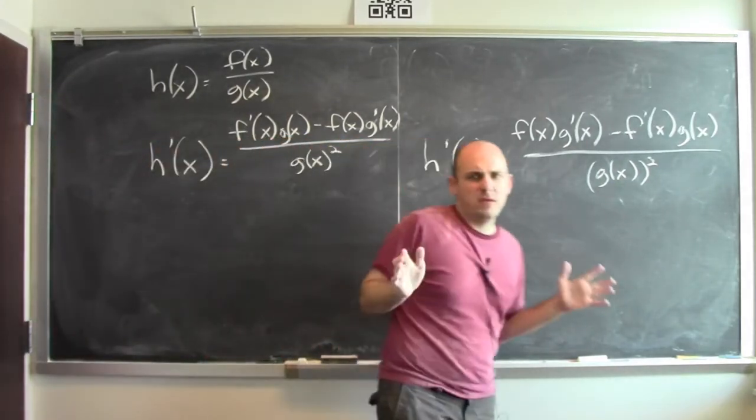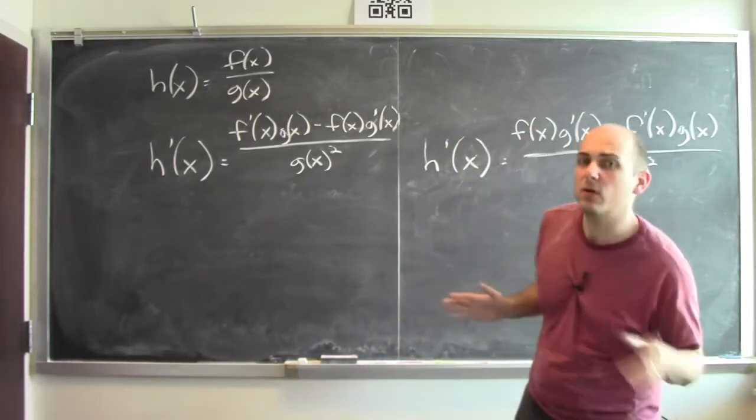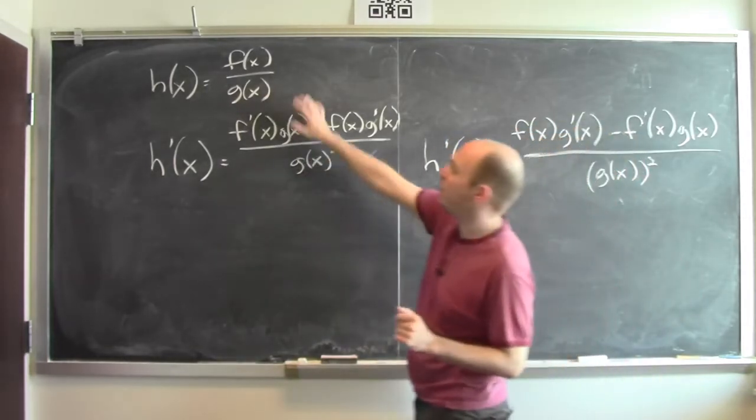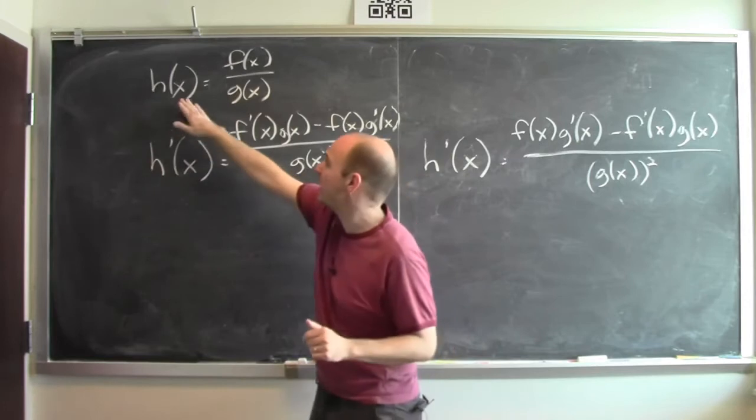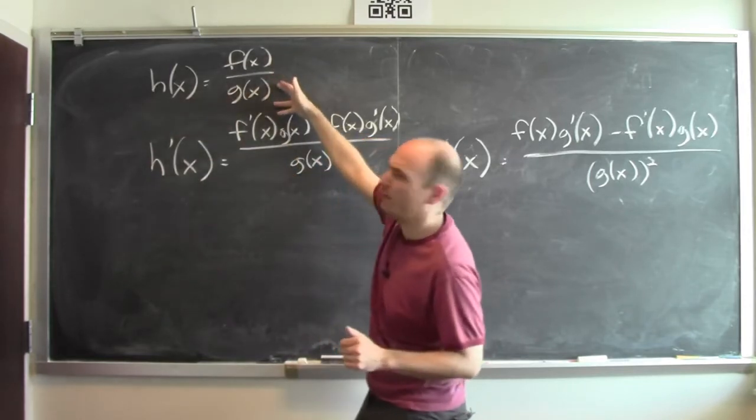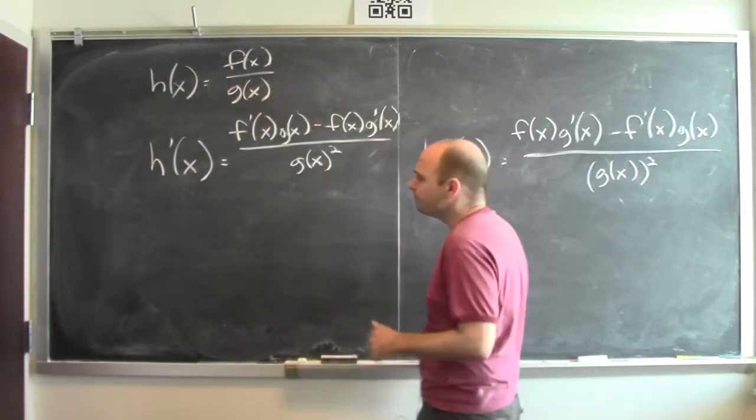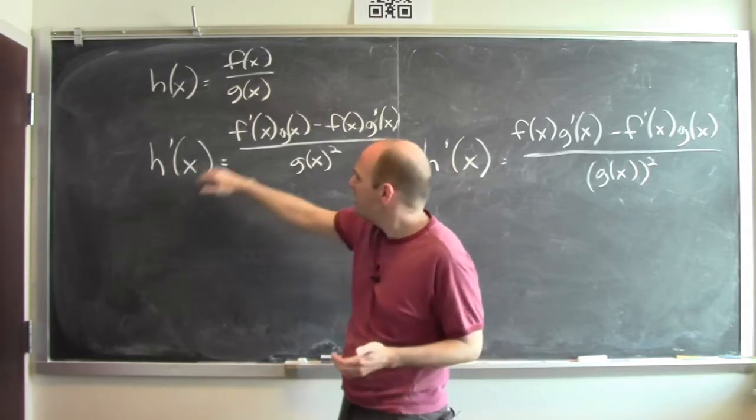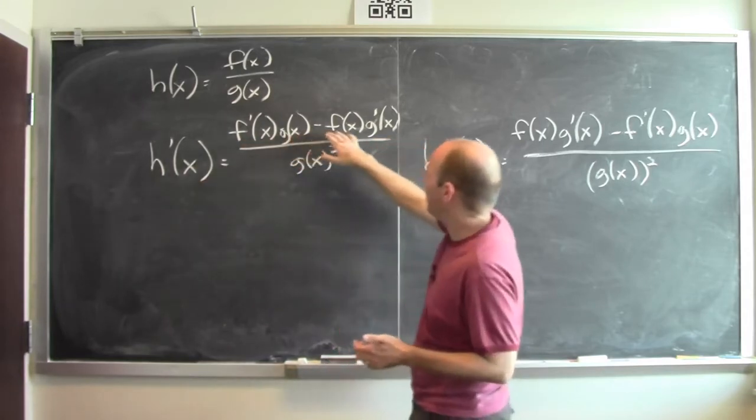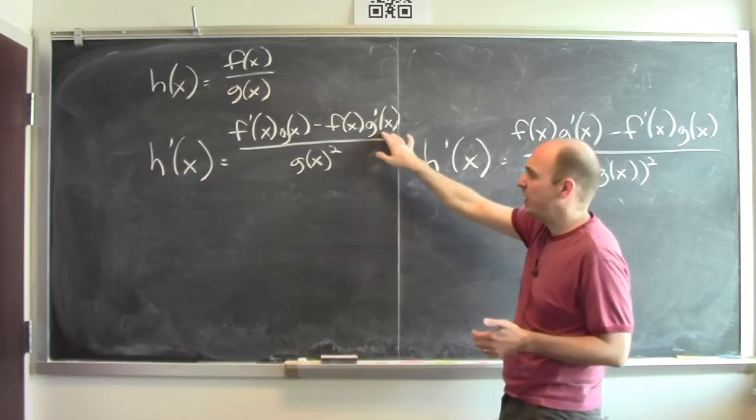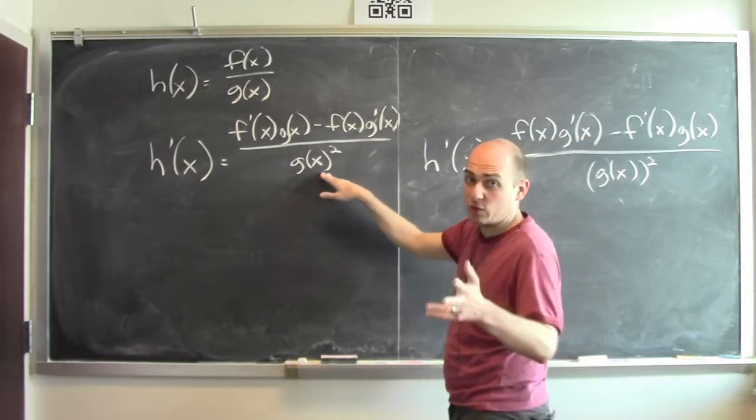The quotient rule can be somewhat tricky to remember. What does the quotient rule say? It tells you how to differentiate a quotient of functions. So here's a function h(x). It's f(x) divided by g(x). The derivative of h is the derivative of f times g minus f times the derivative of g, divided by g squared.